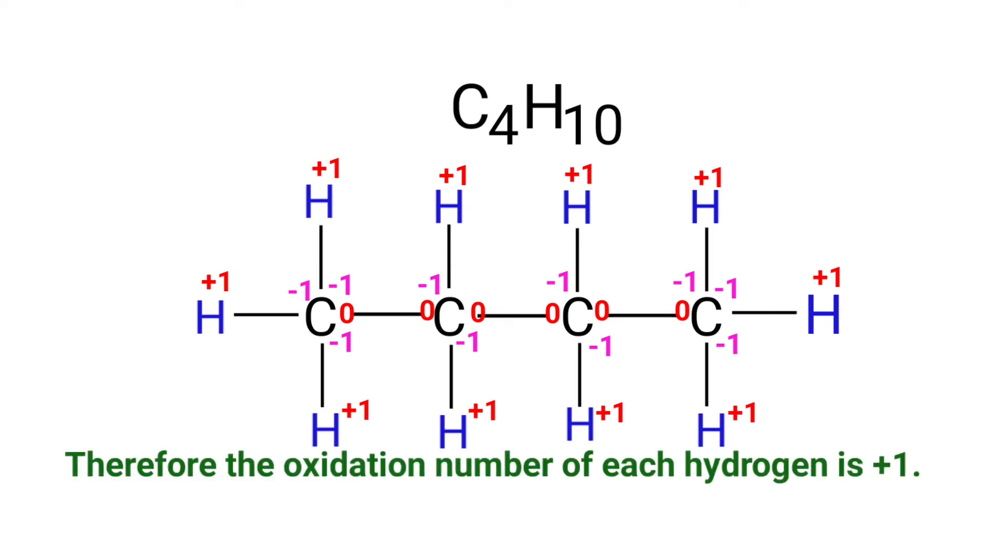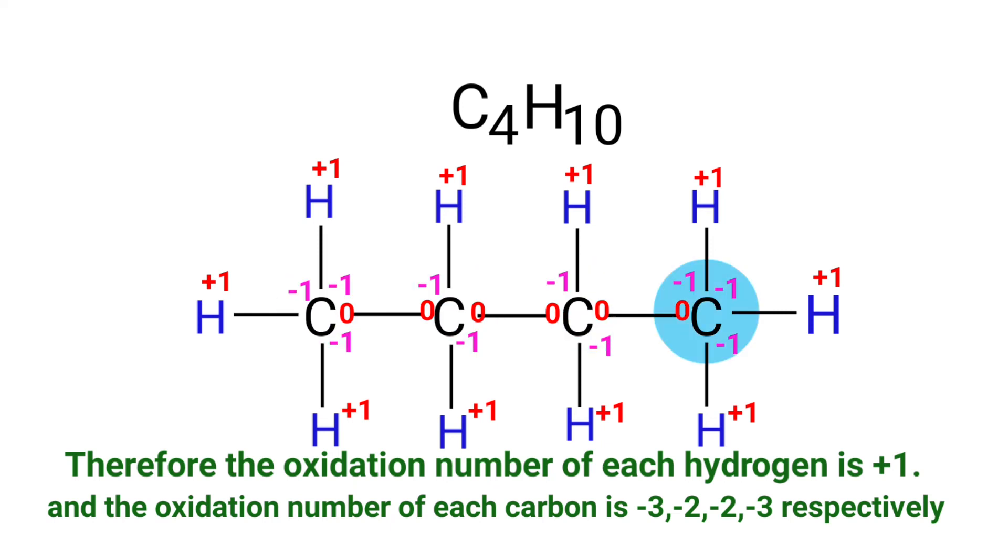Therefore, the oxidation number of each hydrogen is plus one, and the oxidation number of each carbon is minus three, minus two, minus two, and minus three, respectively.